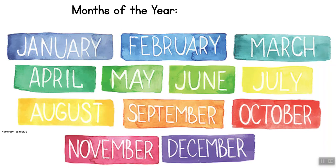So which is the first month of the year? January — perfect. And the last month would be? December, down here at the bottom.